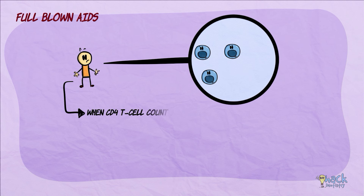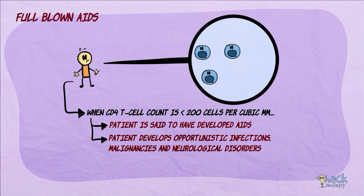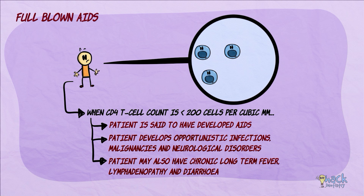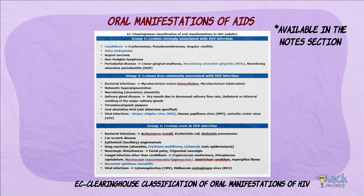When the CD4 T-cell count goes below 200 cells per cubic millimeter, the patient is said to have developed AIDS. Patients develop opportunistic infections, neoplasms, and neurological disease, and also have chronic long-term fever, lymphadenopathy, and diarrhea. The most accepted classification of oral manifestations of HIV is the EC clearinghouse classification, which divides manifestations based on how commonly or strongly they are associated with HIV.